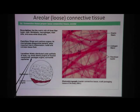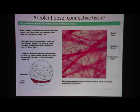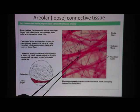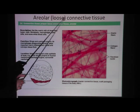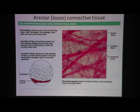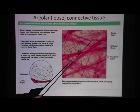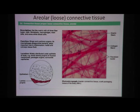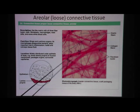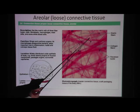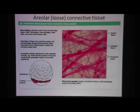Areolar loose connective tissue is found widely distributed underneath the epithelium of the body, surrounding capillaries. So if we ask you to name this tissue, the answer is areolar connective tissue — you don't have to include the word 'loose.' If we ask you to name this cell, the answer is fibroblasts. If we ask you to name the thick band, that's collagen fiber. If we ask you to name the thin line, that's elastic fiber. We can also ask you for one location where areolar connective tissue is found.